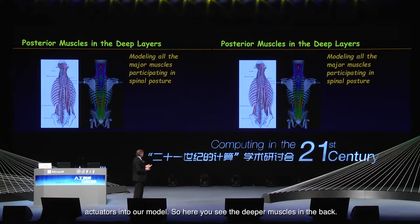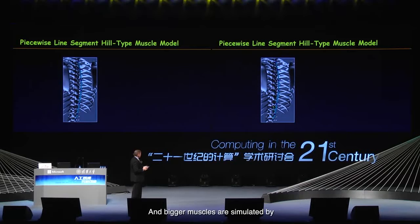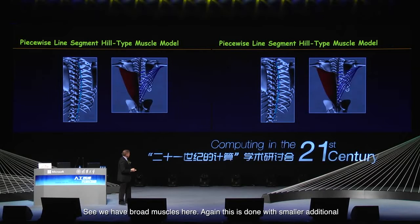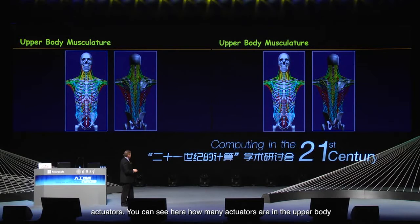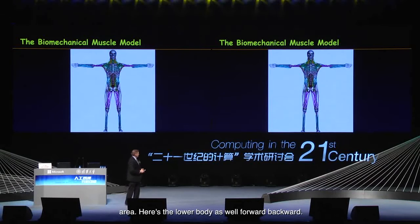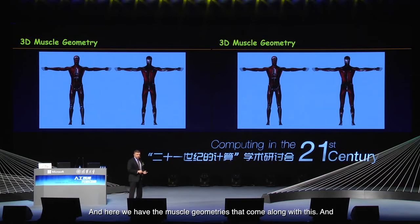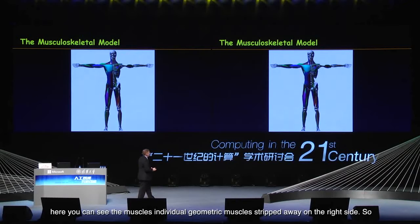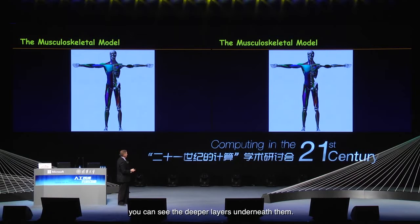Here you see the deeper muscles in the back. Bigger muscles are simulated by hooking up smaller actuators. We have broad muscles here, again done with smaller additional actuators. You can see how many actuators are in the upper body area, as well as the lower body. Here we have the muscle geometries that come along with this, and individual geometric muscles stripped away on the right side so you can see the deeper layers underneath.